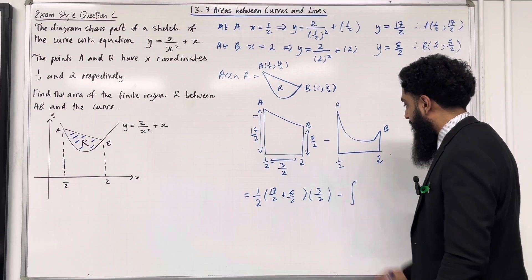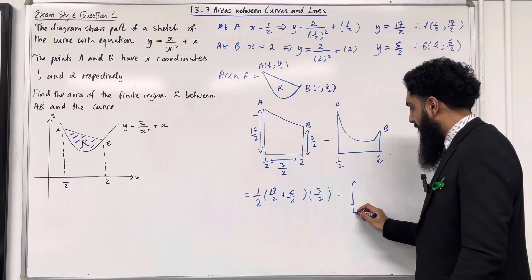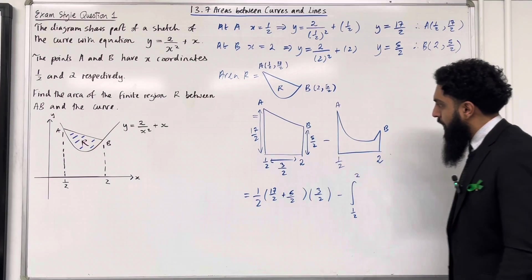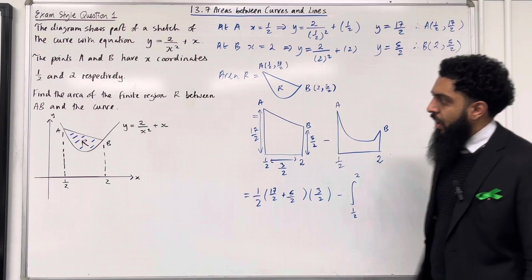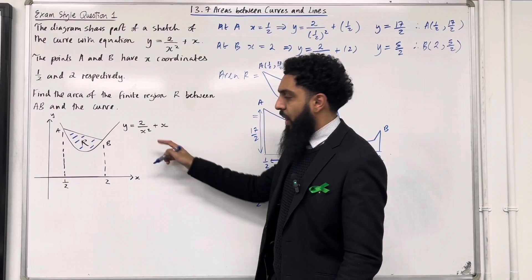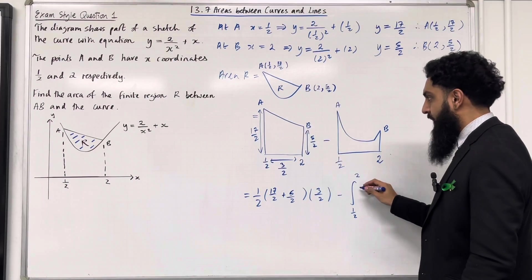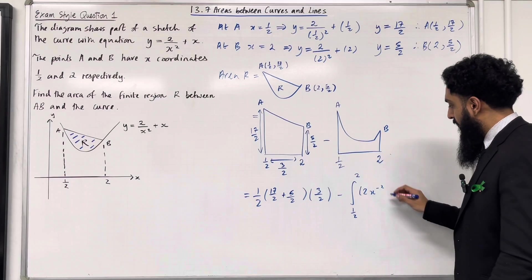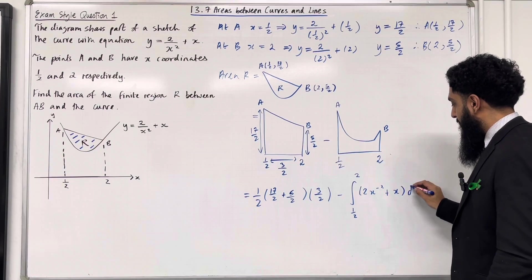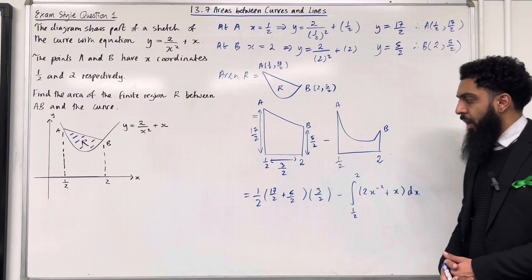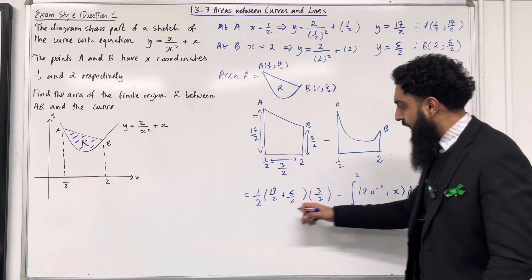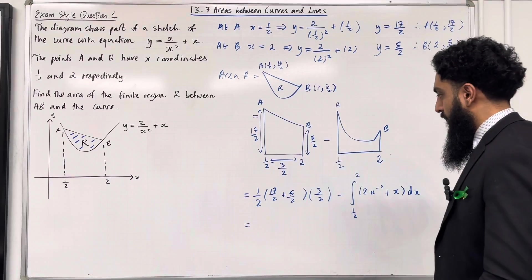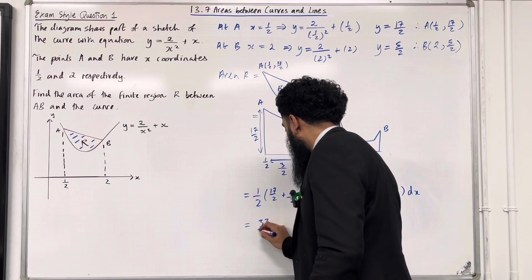Take away the area under the curve: the integral from lower limit one half to upper limit 2. We are integrating 2 over x squared plus x. The first term can be rewritten as 2x to the power of minus 2 so that it can be integrated, then plus x dx. If I put the trapezium calculation into my calculator, I get 33 over 4.